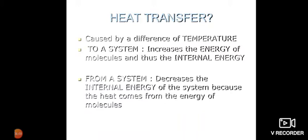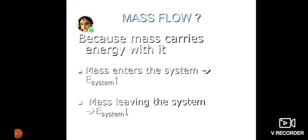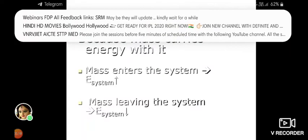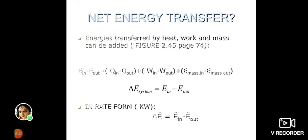Work transfer is energy interaction not caused by a temperature difference. Examples include raising a piston, rotating a shaft, or an electric wire. Work transfer to a system is positive, and work transfer from a system is negative. Mass flow carries energy with it. The net energy transfer — energy in minus energy out — equals heat in minus heat out, plus work in minus work out, plus mass in minus mass out.